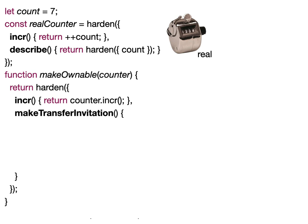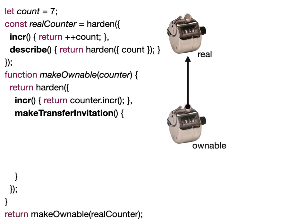To make it into an ownable, we wrap it using this makeOwnable function, where when you call makeOwnable with the real counter, it creates this new ownable counter that is a revocable forwarder forwarding messages to the original counter.